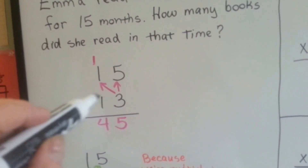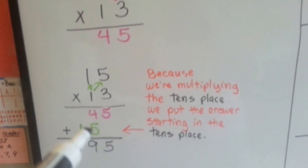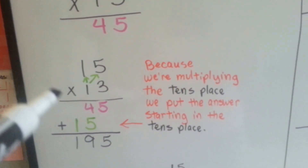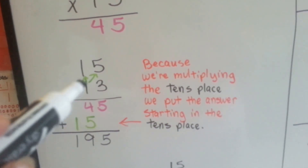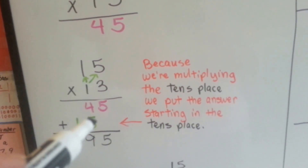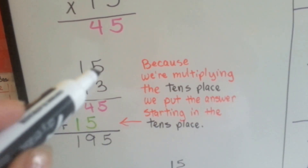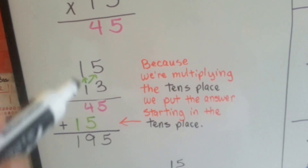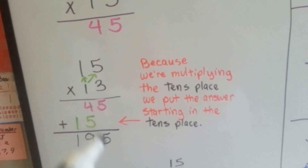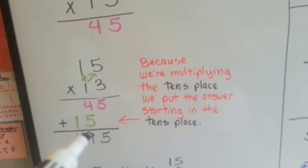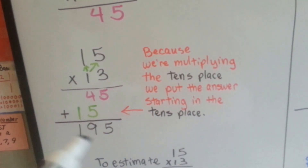Now we need to do the tens place. So we've got 45 written here. And because we're multiplying the tens place, we put the answer starting in the tens place right here. So 1 times 5 is 5 and 1 times 1 is 1. Then we add them all together: 5, 4 and 5 is 9, and we drop the 1 down. 195.